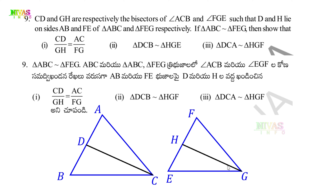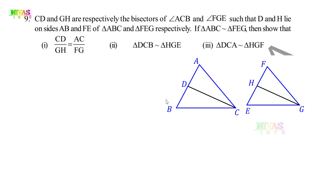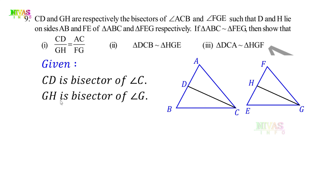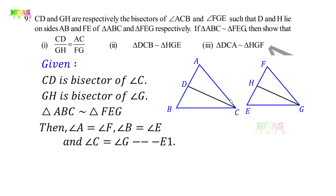The given points are: CD is the bisector of angle C, and GH is the bisector of angle G. Since triangle ABC is similar to triangle FEG, these two triangles are similar. Therefore, angle A is equal to angle F, angle B is equal to angle E, and angle C is equal to angle G. This is equation 1.